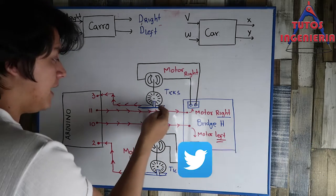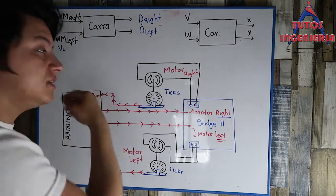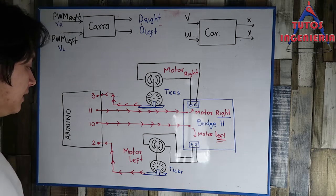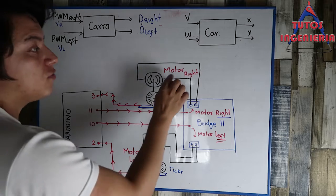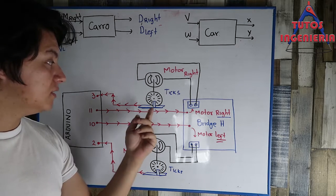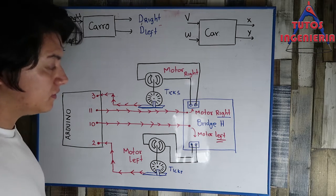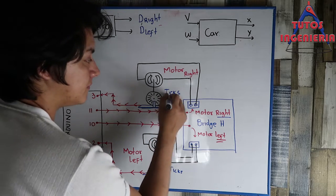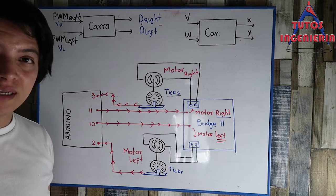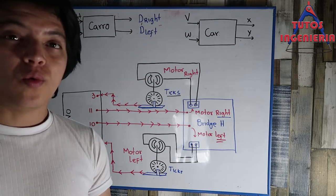The sensor sends the signal to pin 3 of the microcontroller. The reading of the right motor is made by the encoders, and the encoders measure in ticks. It's very important that you understand this concept of ticks.